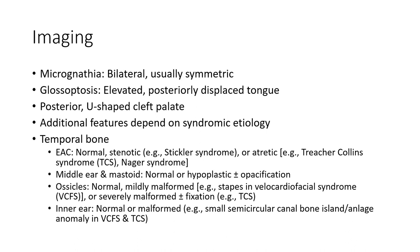Temporal bone findings: External auditory canal (EAC) may be normal, stenotic, or atretic. Middle ear and mastoid may be normal, hypoplastic, or opacified. Inner ear may be normal, or show mild or severe malformation, with or without ossicular fixation.